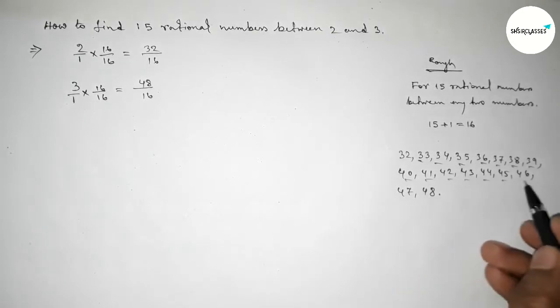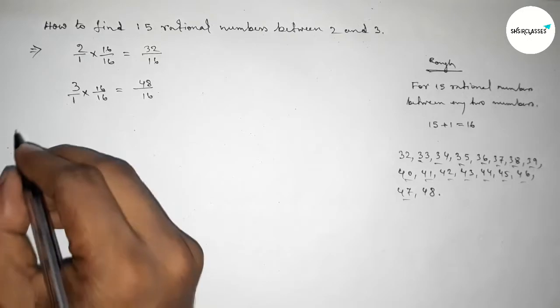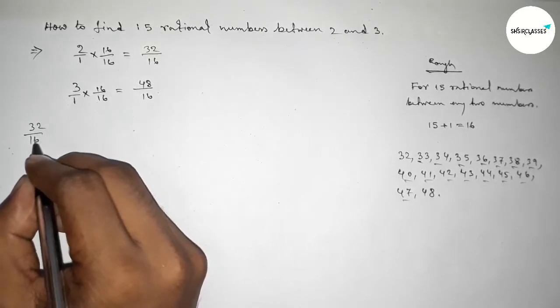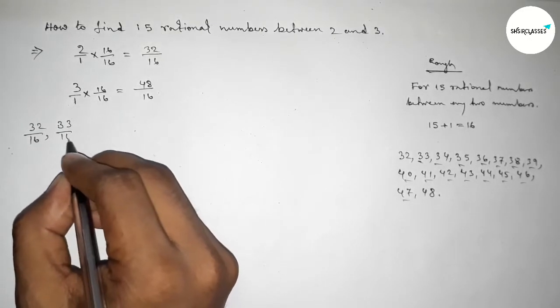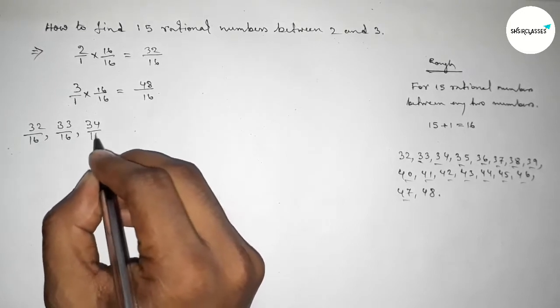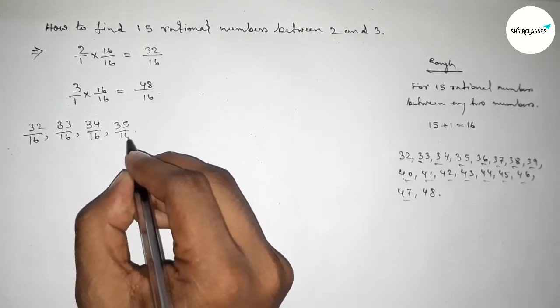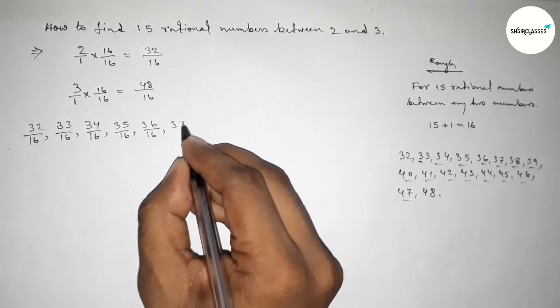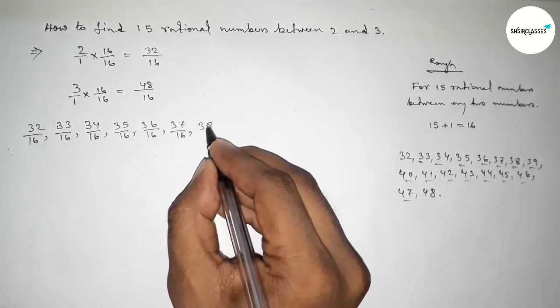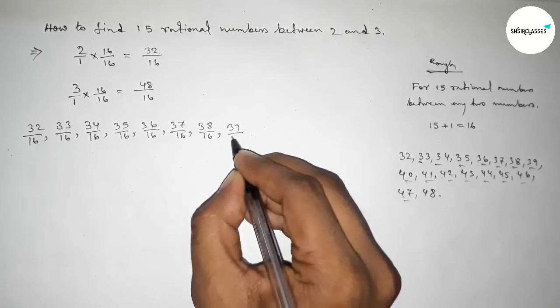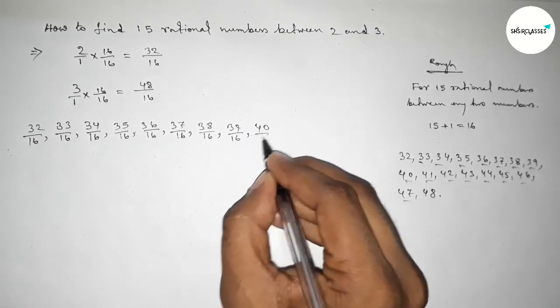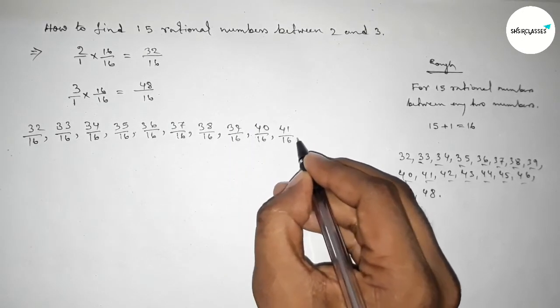These are the 15 integers. Now forming all the rational numbers here: first one 32 over 16, 33 over 16, 34 over 16, 35 over 16, 36 over 16, 37 over 16, 38 over 16, 39 over 16 up to 48 over 16.